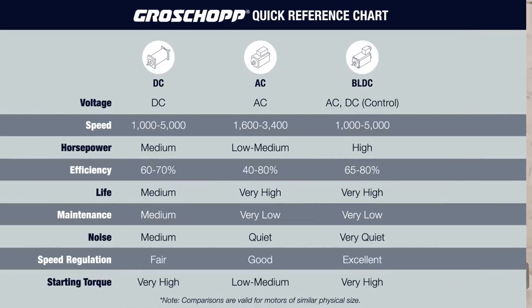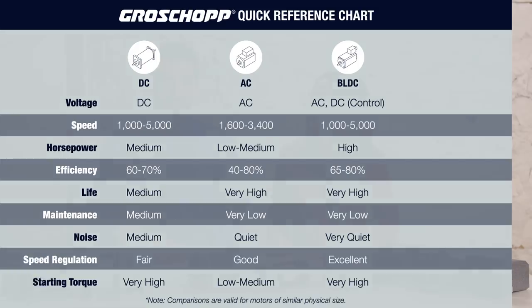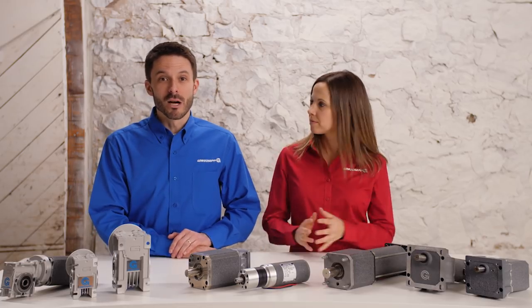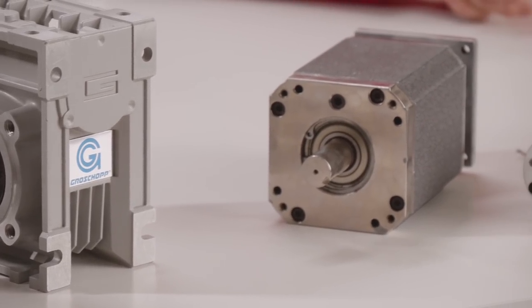We've created a chart to quickly compare the motor types we're discussing and provide a starting point when you have an application in mind. The chart compares motors of roughly the same physical size and differentiates the motor types by speed, horsepower rating and efficiency, life and noise ratings, and starting torque. You can download the chart using the link below. When selecting a motor for an application, you'll first determine which criteria are most important and make your motor selection accordingly — we'll cover this in more detail in later videos.